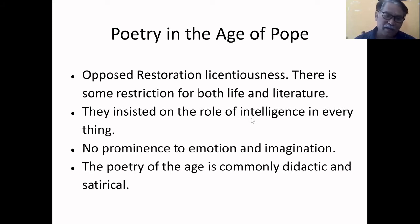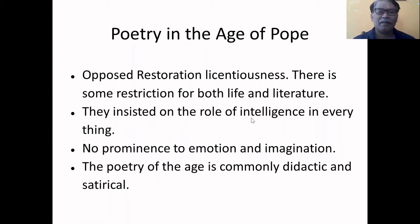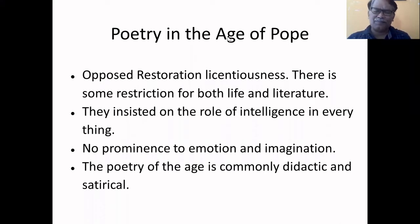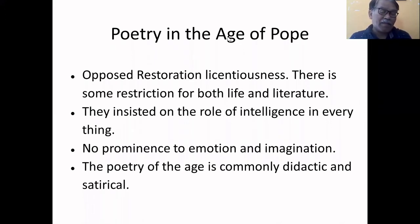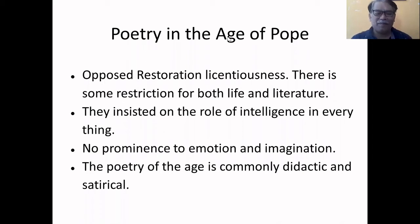Emotion and imagination do not play a major role in 18th century poetry. Emotion and imagination are the characteristics of romantic poetry. That's why the 18th century is called the age of prose and reason. The poetry of this age is commonly didactic and satirical. Didactic means poetry with a purpose. Satirical means poetry of ridicule, criticizing either the society, men, or manners. These are some of the things you normally find in the Age of Pope.